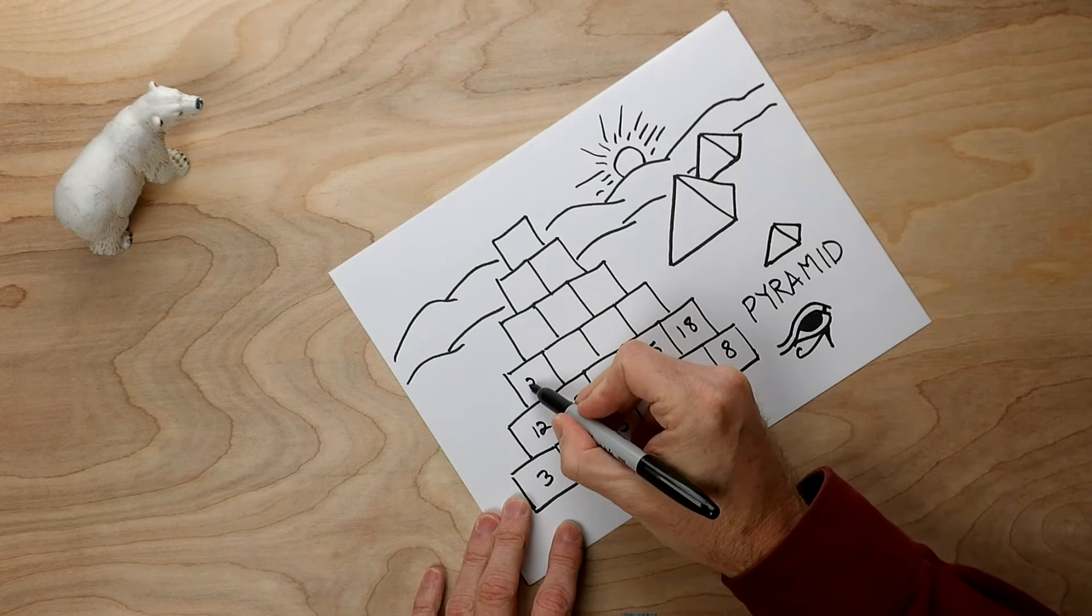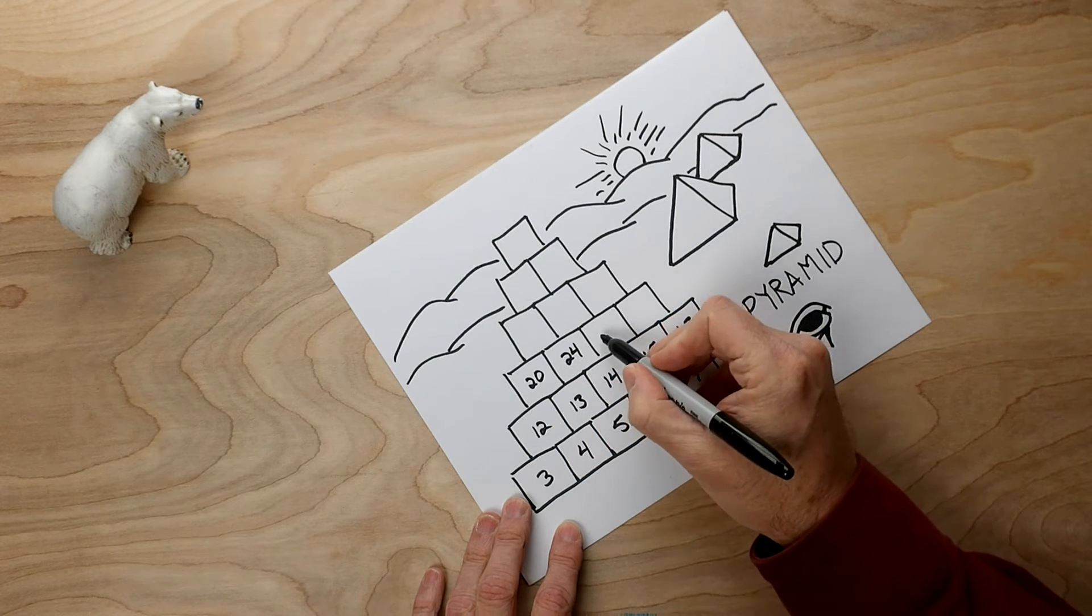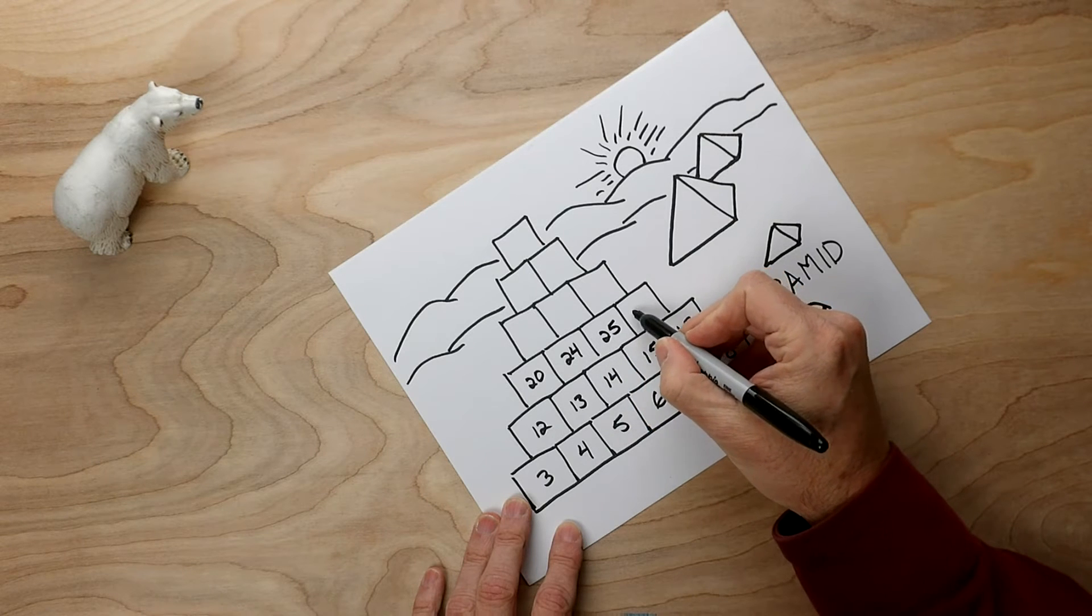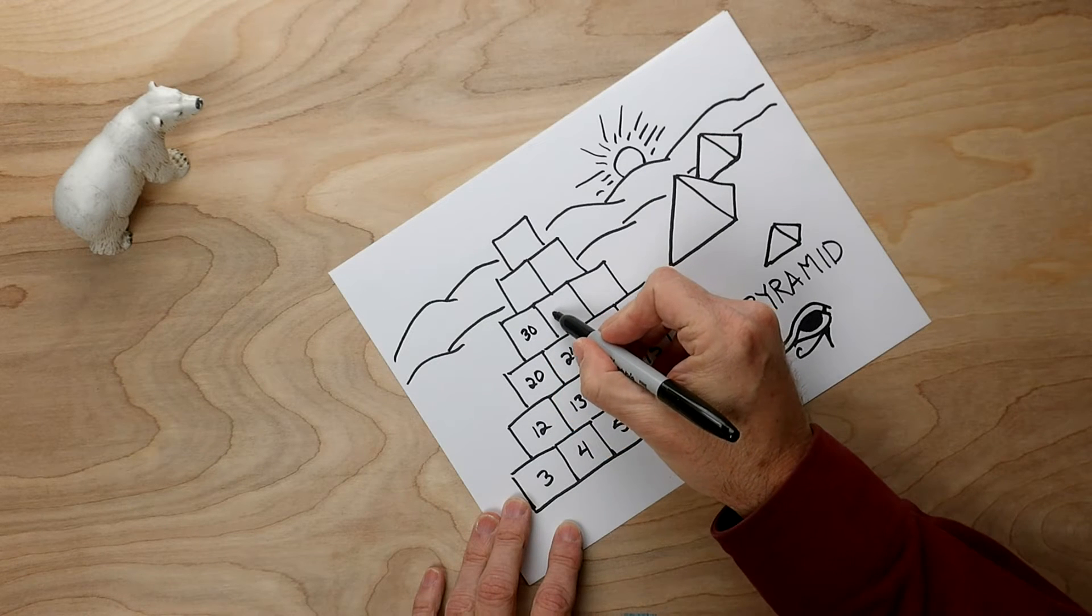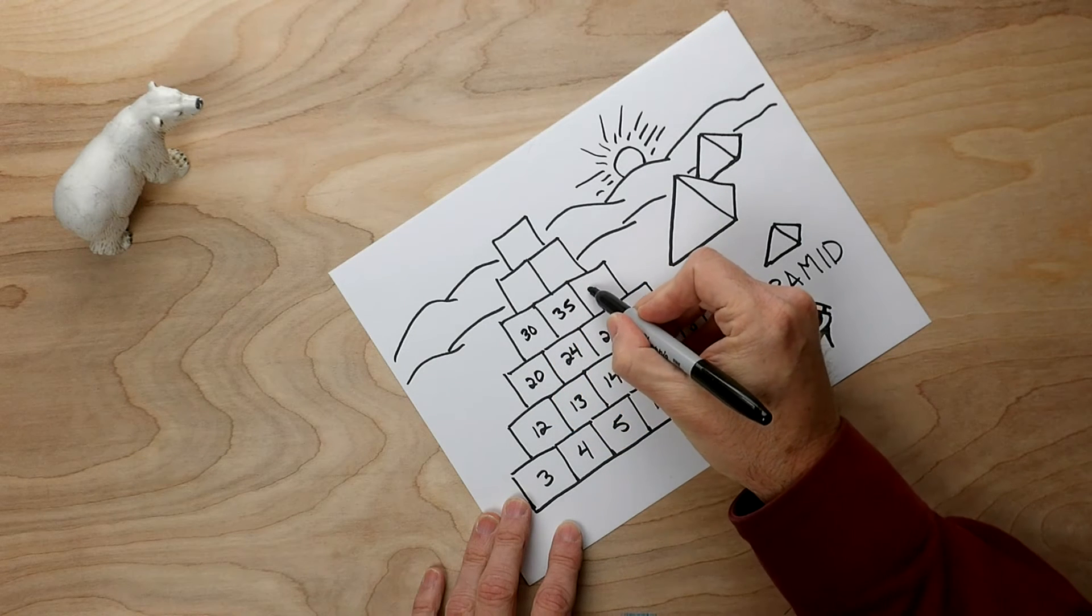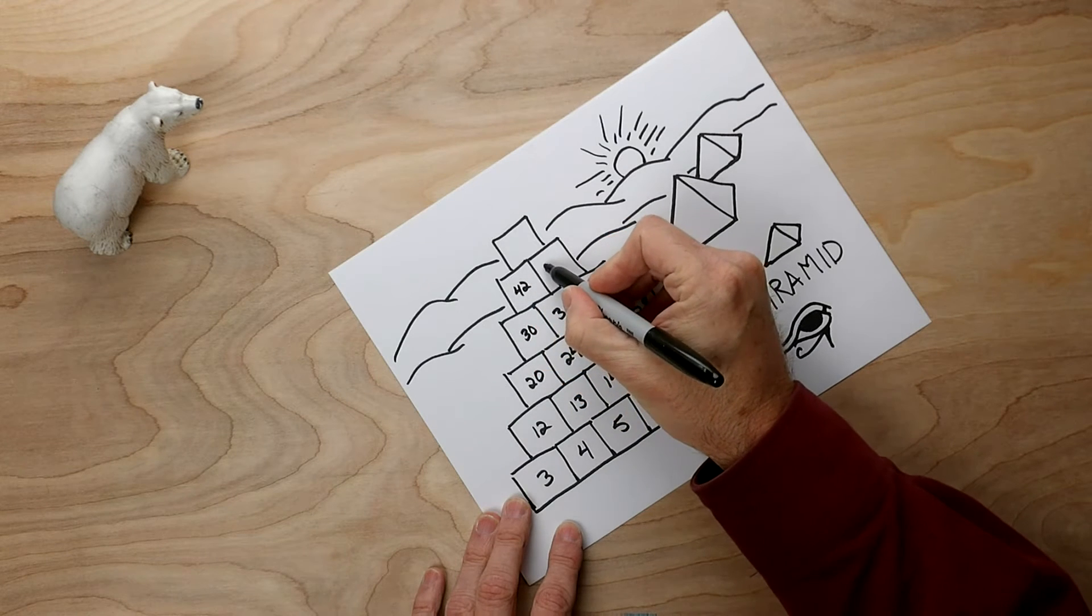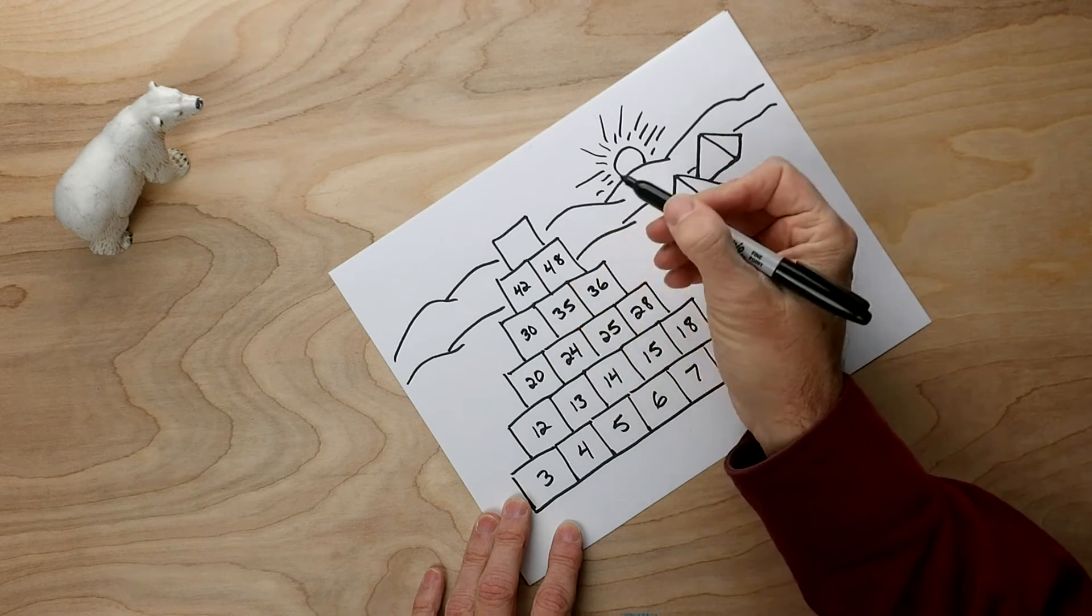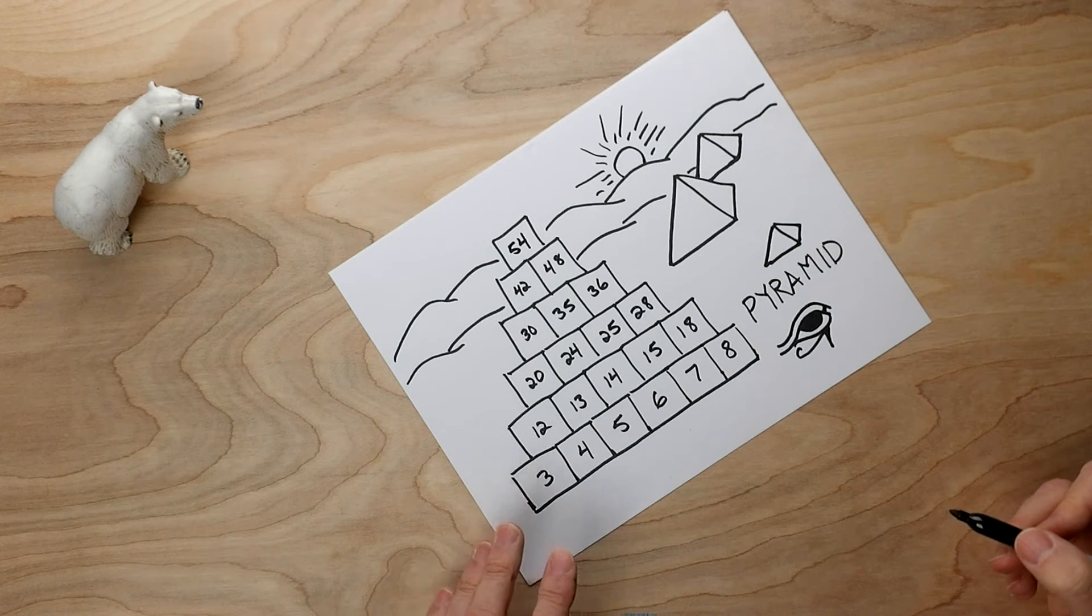The next row, 20, 24, 25, 28, and then 30, 35, 36, 42, 48, and to top it all off, 54. And that's our game board.